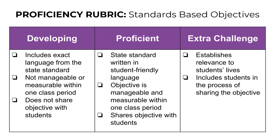To receive proficient level status in the standards-based objective, you will need to create and share an objective that you've written with your student audience. This objective should be aligned to a state standard and written in student-friendly language so they can understand exactly what it is they're doing. Lastly, this objective must be manageable and measurable within one class period — it's a daily objective, not necessarily a unit objective.